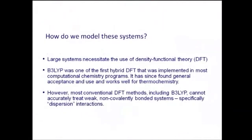How do we model these systems? We're interested in processes where bonds are made and broken and electrons are transferred around, which means we need to use an electronic structure theory method like density functional theory. Because we're looking at large systems, density functional theory is really the only option — it's fairly computationally efficient compared to wave function theory methods. We like B3LYP: it's fairly long in the tooth now, but it's well-proven, and its pitfalls tend to be fairly well-known. For the most part, it works quite well for chemistry.